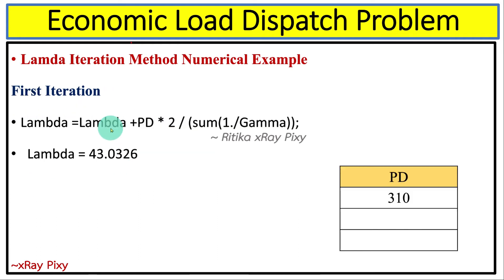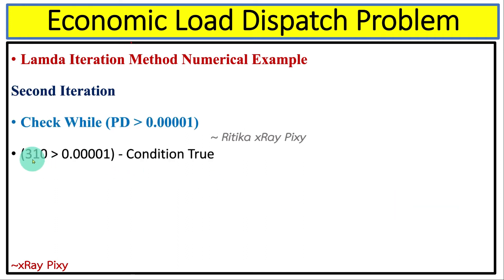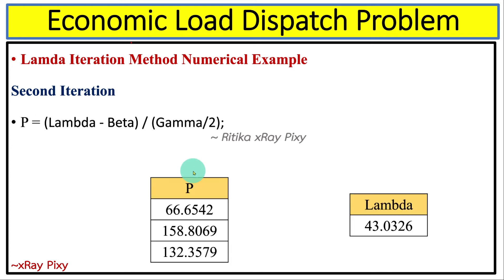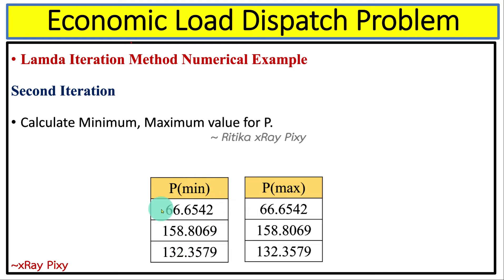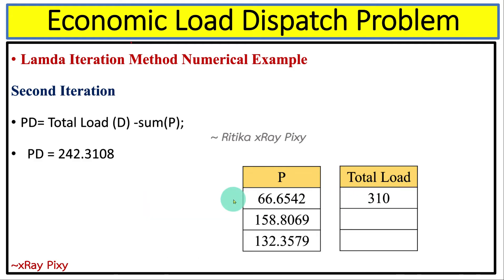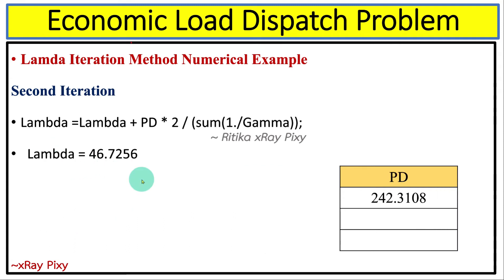For the second iteration, with Pd equal to 310, we check the condition — it is true — and move to the next step. We put all the values in and compute the new P values, check minimum and maximum bounds, then calculate the new Pd, which comes out to 242.3108. After that, we calculate the new value for lambda.